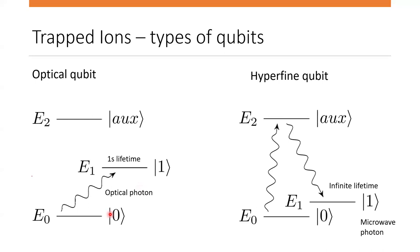This technique was first developed in 1950 by Wolfgang Paul, who received a Nobel Prize for his work, and the technique is now considered very well developed. The |0⟩ and |1⟩ states of the qubit are the valence electron energy levels of an ion. We distinguish between two types of qubits: an optical qubit and a hyperfine qubit.